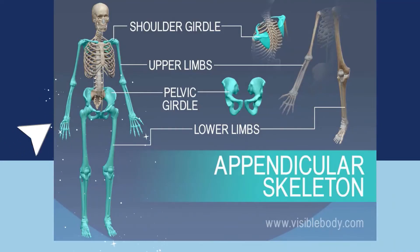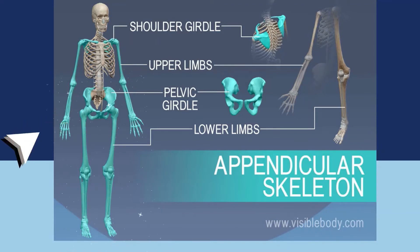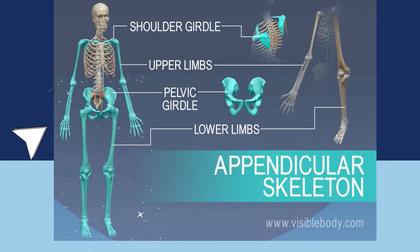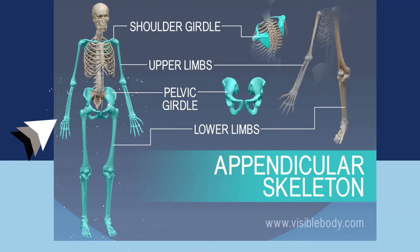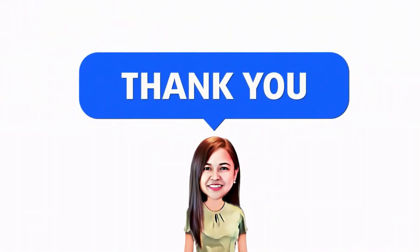And aside from this, we have the appendicular skeleton, which includes the shoulder girdle, the upper limbs, the pelvic girdle, and of course the lower limbs — including the bones at our feet. So, these are the divisions of the skeleton.